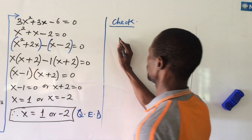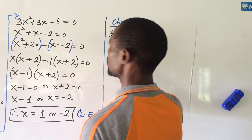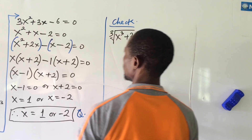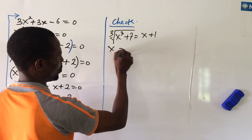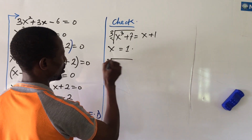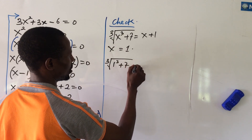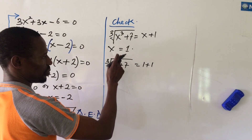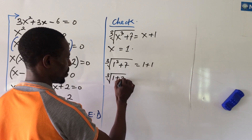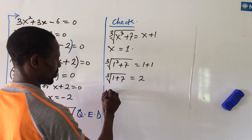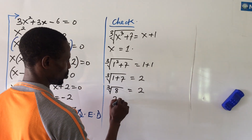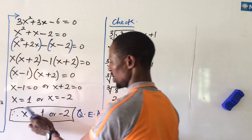Check, case 1: x = 1. The equation is the cube root of (x³ + 7) = x + 1. Substituting: cube root of (1³ + 7) = 1 + 1, which gives cube root of 8 = 2. The cube root of 8 is indeed 2, so the first solution is correct.